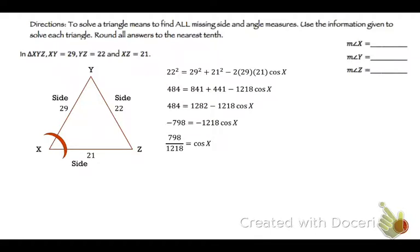Anytime you're finding an angle, you use the inverse. So that will be X equals cosine inverse of 798 divided by 1218, which is 49.1. So X equals 49.1.